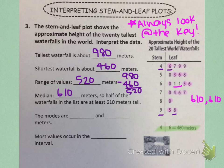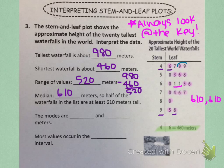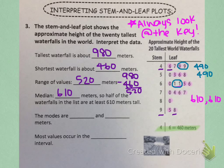This means that half of the waterfalls in the list are at least 610 meters tall. Now we need to find the modes — the numbers that occur the most often. Looking at the leaves, I notice two 9's for the stem of 4, so that's 490 appearing twice. And right here I see two 1's next to each other, so that's 610 appearing twice as well. Because both numbers appear twice, they are both the modes: 490 and 610.